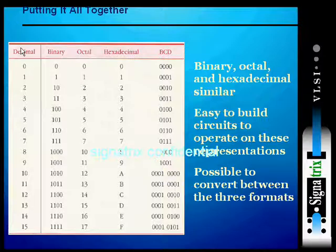When we talk about decimal, it can be converted to binary, and similarly binary can be converted to decimal. Decimal can be converted to octal, and octal to decimal conversion is possible. The same goes with hexadecimal. It's easy to build circuits to operate on these representations, and it's possible to convert between the three formats.